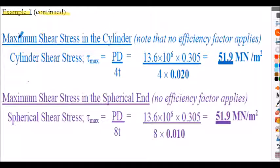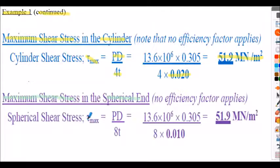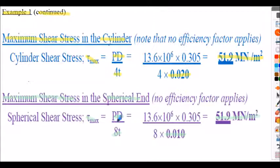For the maximum shear stress — no weld efficiency is applied here. For the cylinder: τ_max = pd/4t. With t = 20 mm = 0.02 m, τ_max = 51.9 MN/m². For the spherical end: τ_max = pd/8t. With t = 10 mm = 0.01 m, this also evaluates to 51.9 MN/m². So both have the same shear stress level, even though the sphere is half the cylinder's wall thickness, because the shear stress formula for a sphere is half that for a cylinder.